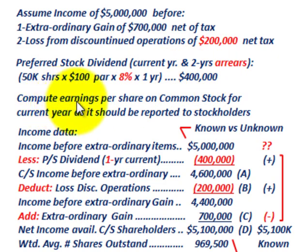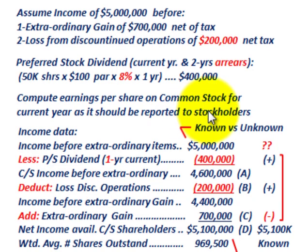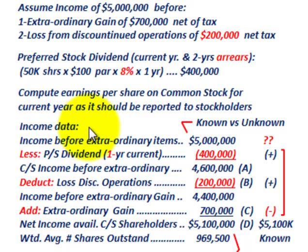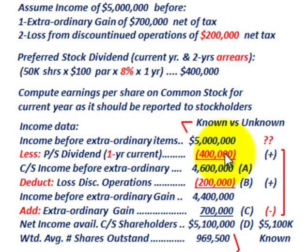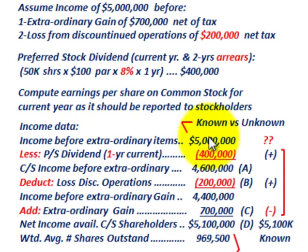Our mission is to compute the earnings per share for common stock for the current year as it should be reported to the stockholders on the financial statements. The first thing we have to do is lay out this income data. Our goal is to get down to the net income available to the common stock shareholders. Everything has to be reported on a per share basis for our gains and losses. So first, we start with income before the extraordinary items — that's $5 million.